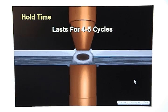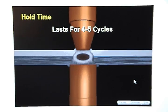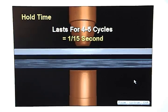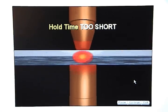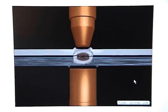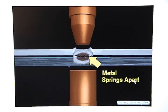Hold time usually lasts for four to five cycles, which is about one-fifteenth of a second. If the hold time is too short, the outer perimeter of the weld nugget will still be molten when the weld tips open and the metal will spring apart.